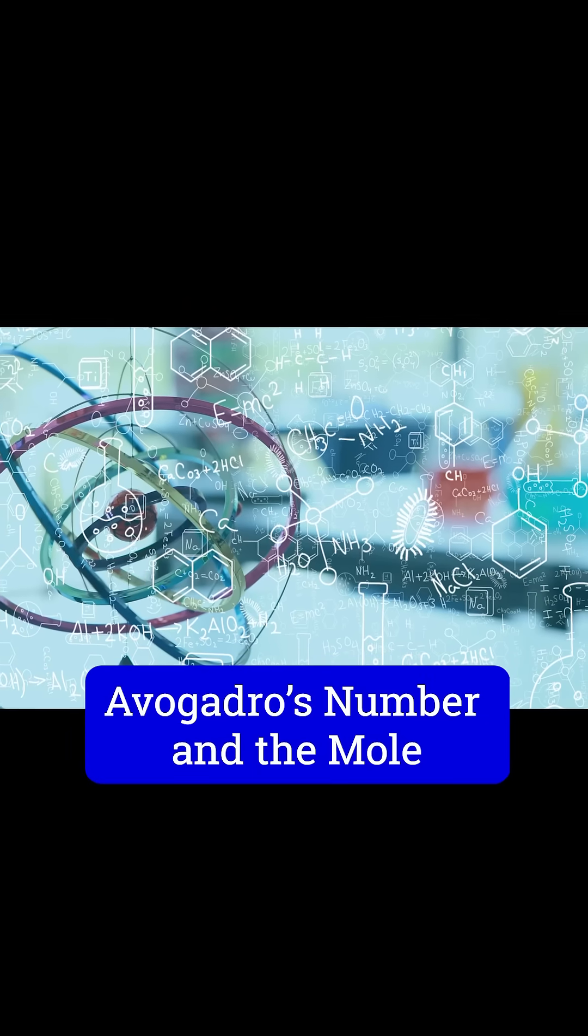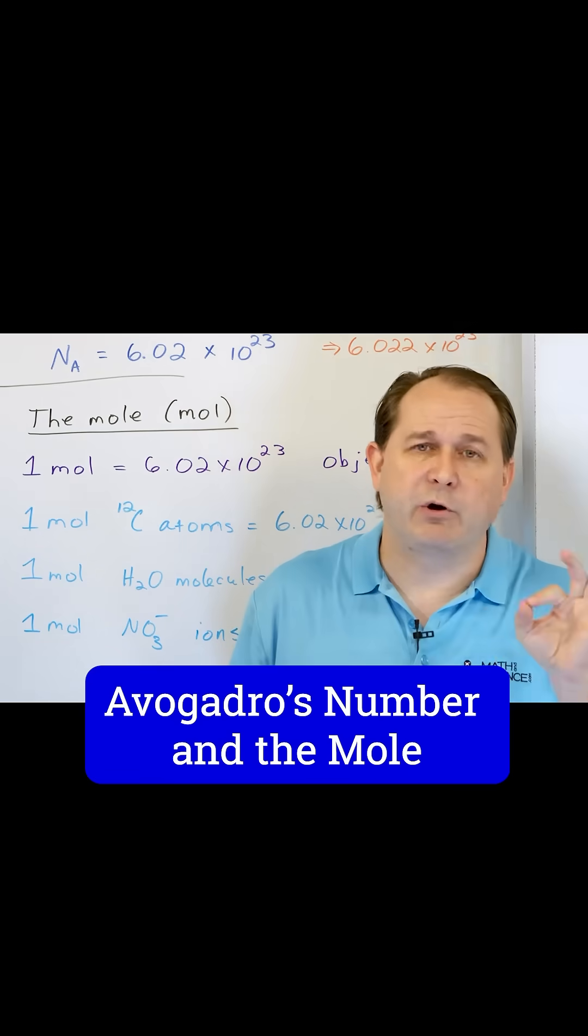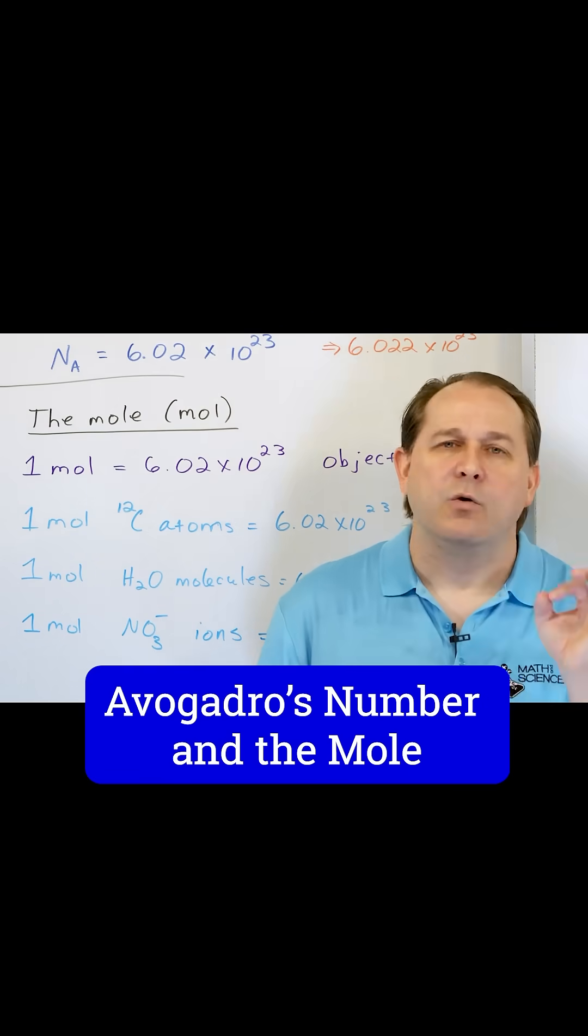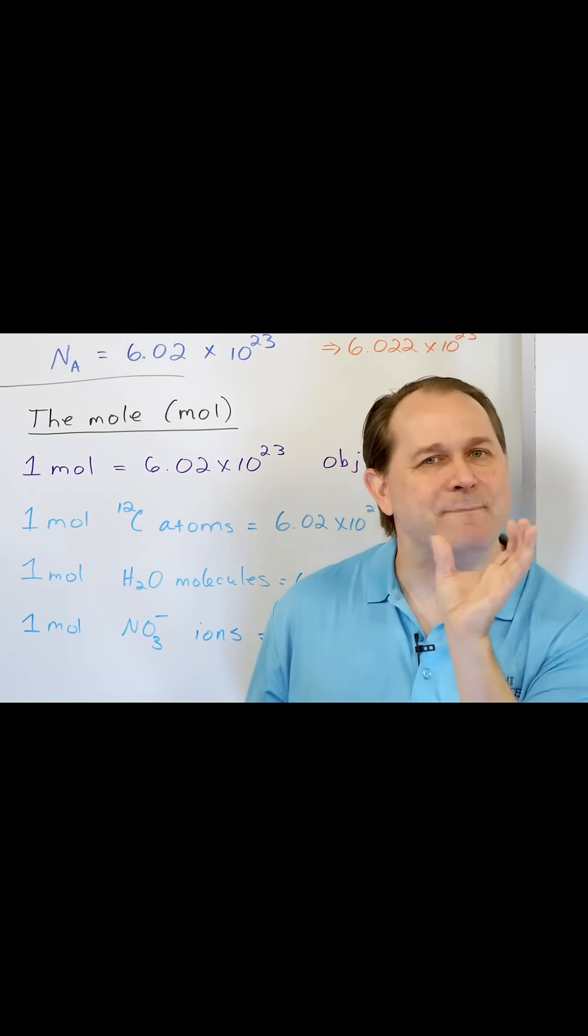So we've talked about Avogadro's number is just the number, 6.02 times 10 to the 23rd. We said that one mole of an object is that many.